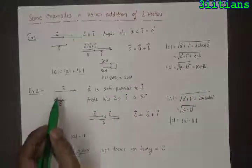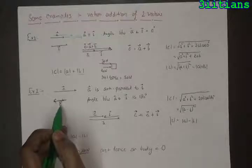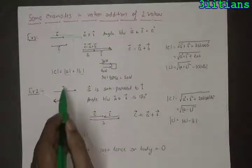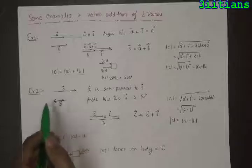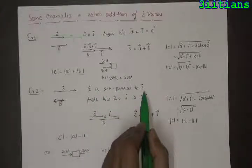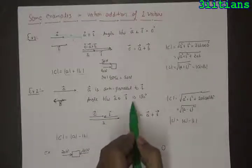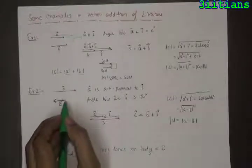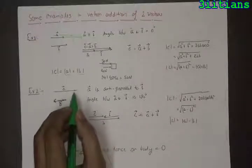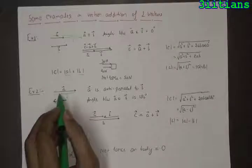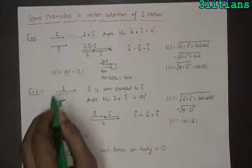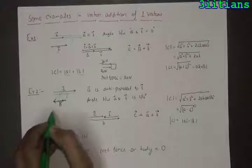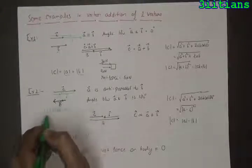In the next example, if a vector and b vector are anti-parallel to each other and they have different magnitudes, we want to find a vector plus b vector. A vector is anti-parallel to b vector means the angle between a vector and b vector is 180 degrees. I take the tail of b and place it on the head of a; the third side will be a vector of this much magnitude. The magnitude of c vector will simply be equal to the magnitude of a vector minus the magnitude of b vector.